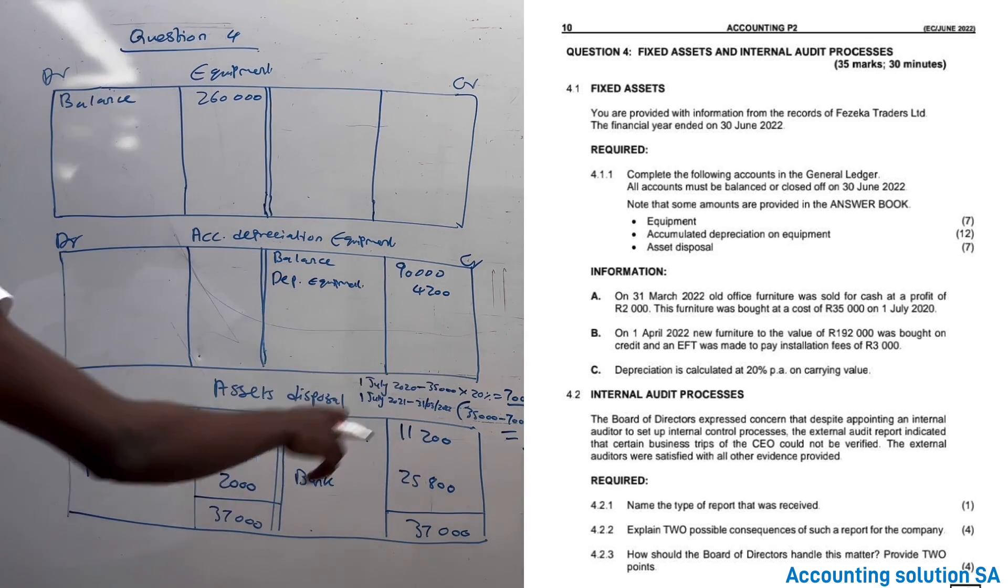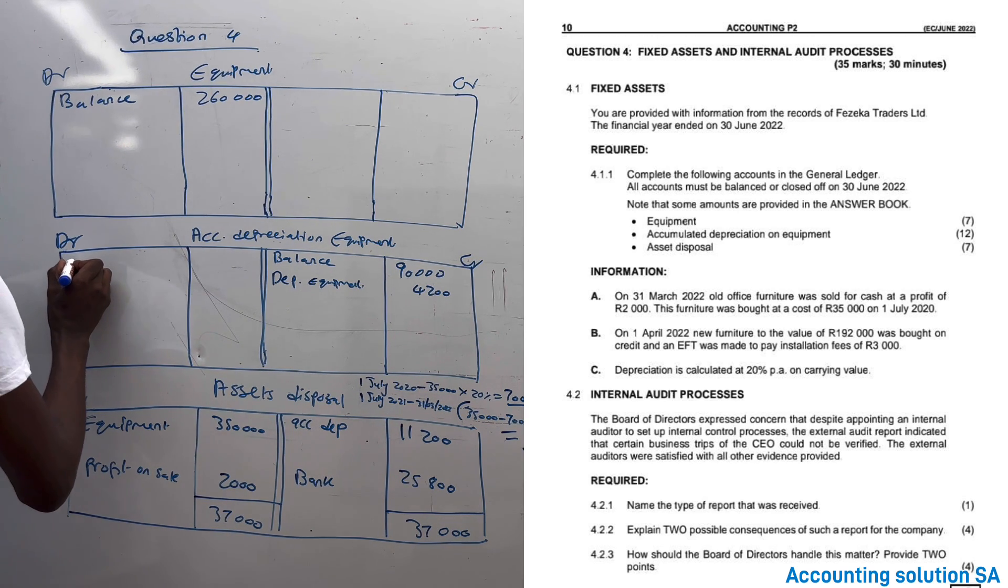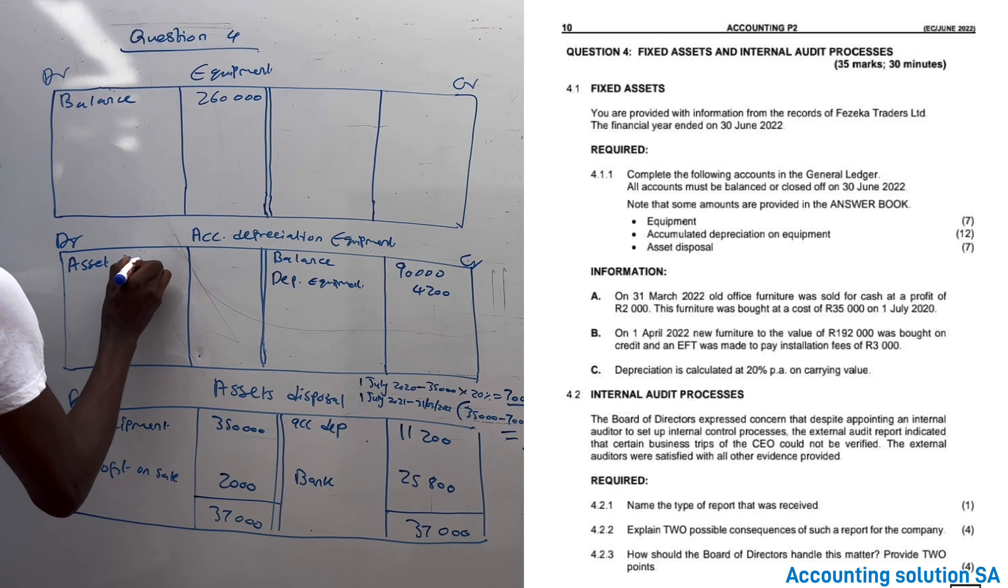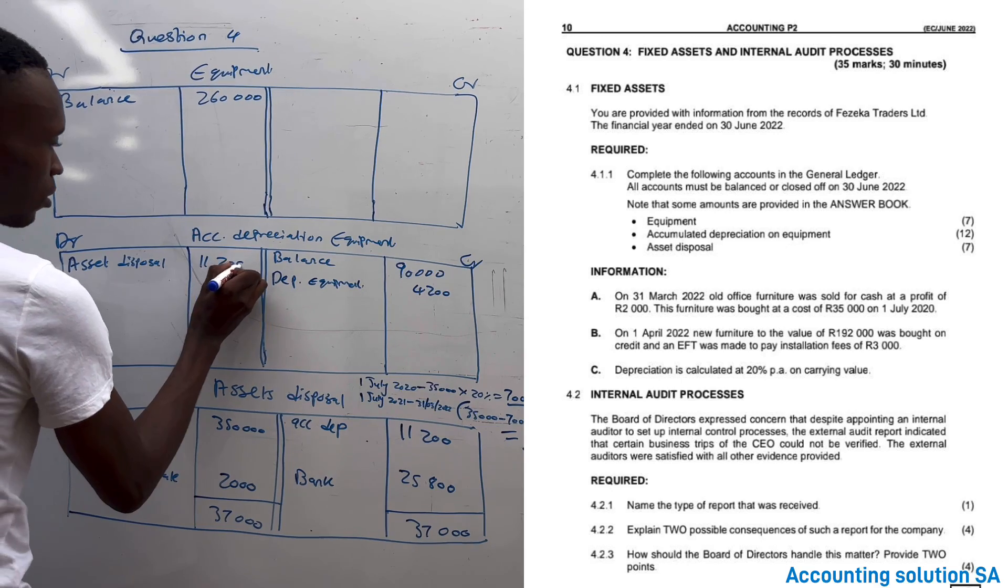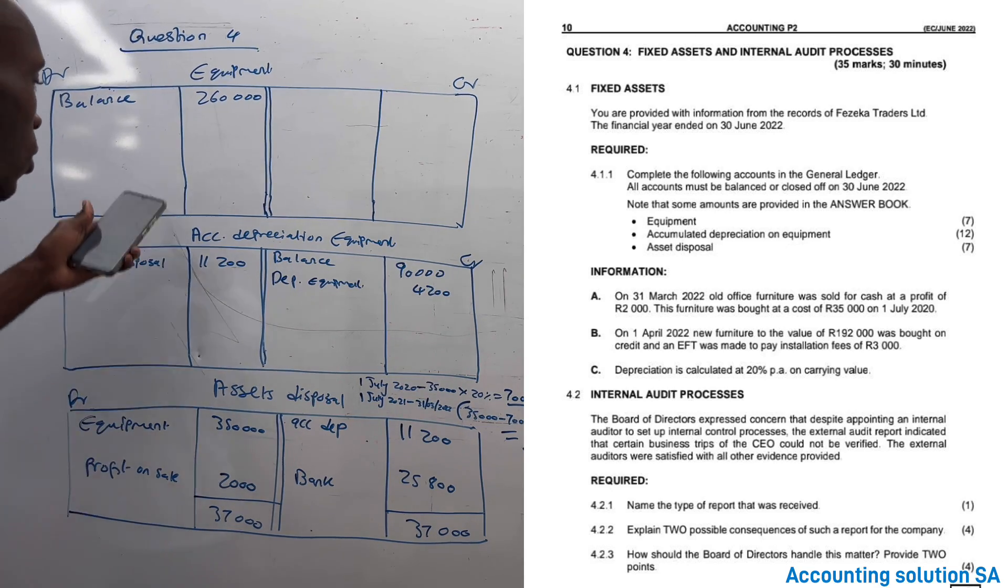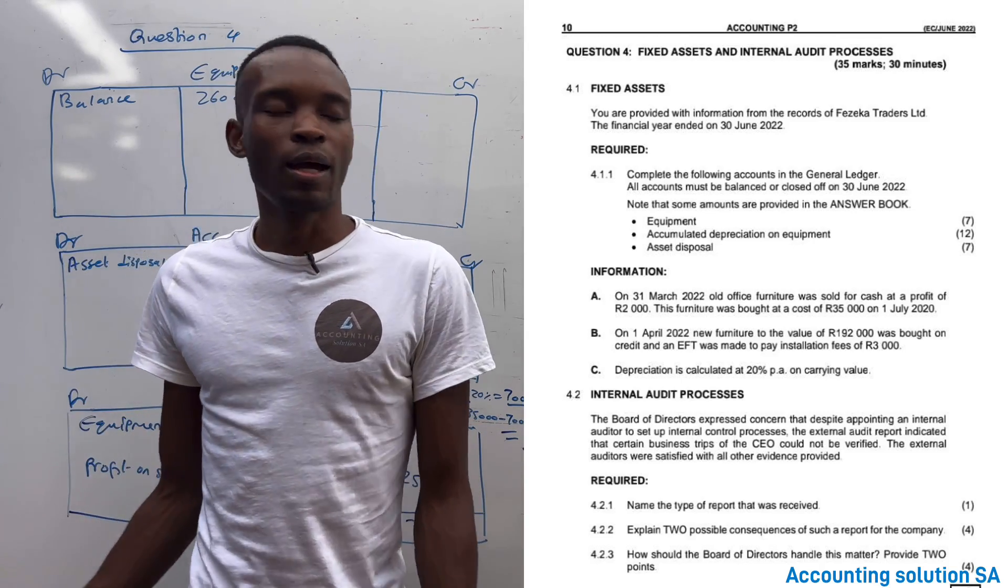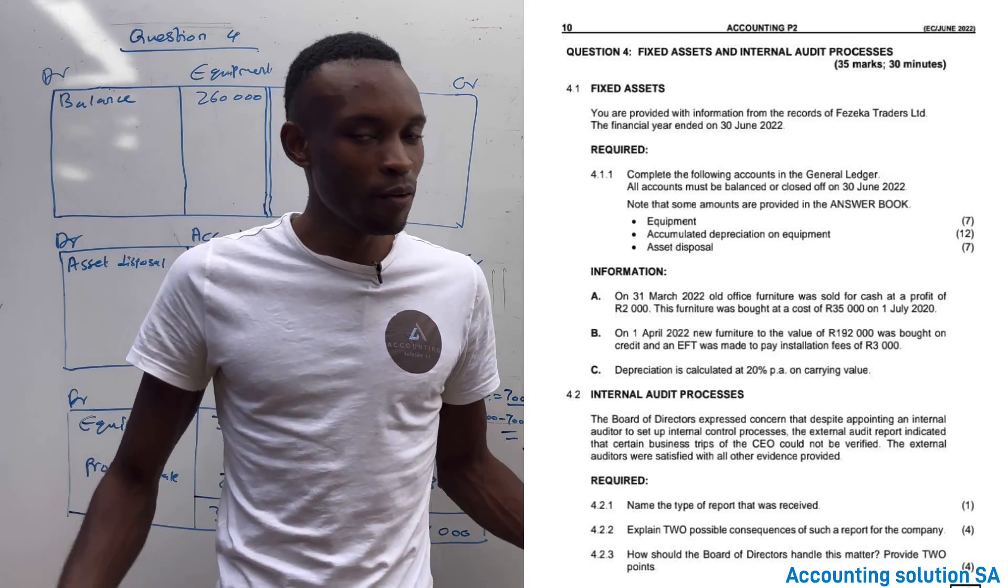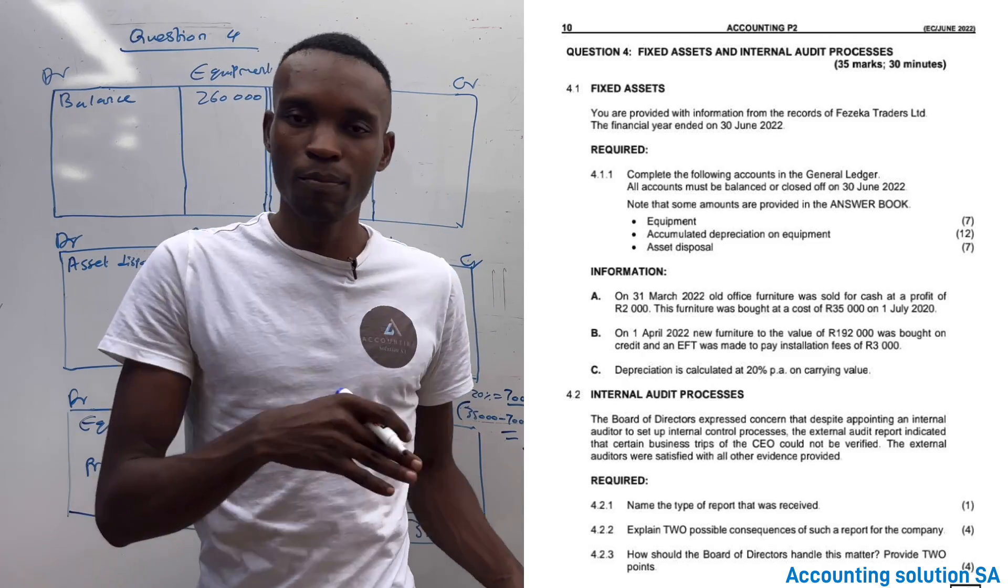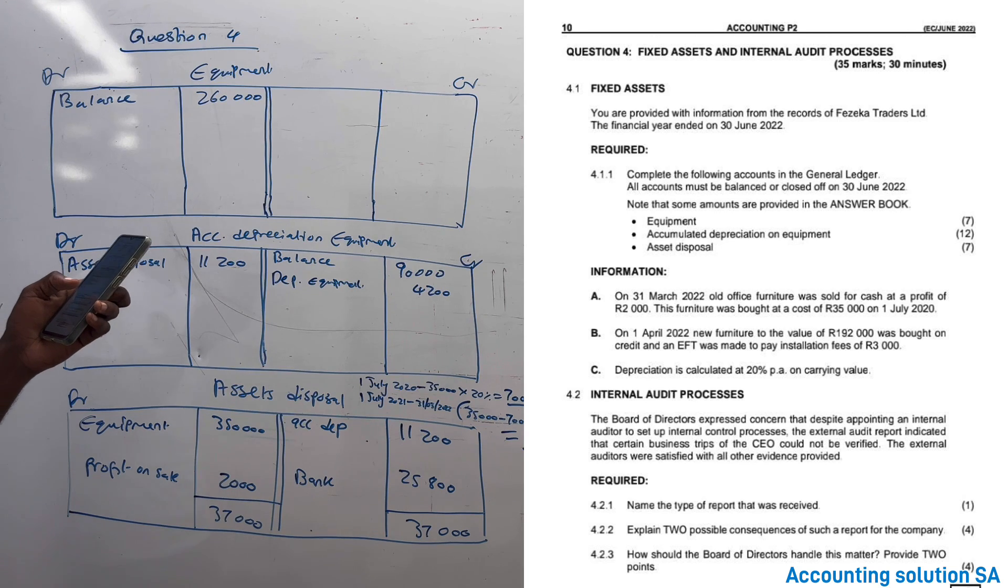And now the total, including the one of current year and old one, we have to record it under accumulated depreciation as asset disposal of 11,000. Why are we taking it out? Because, guys, we no longer have that equipment, which means that we have to take out everything. The cost is out, even the depreciation must go. That's why we record it on the debit side.